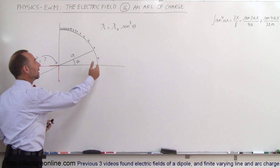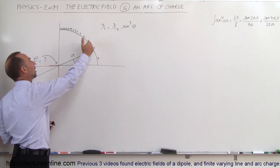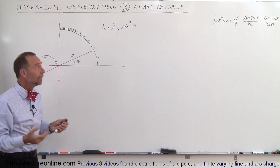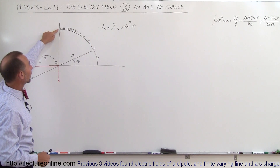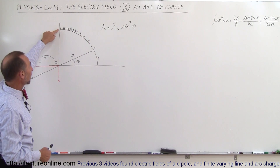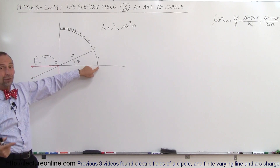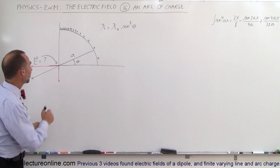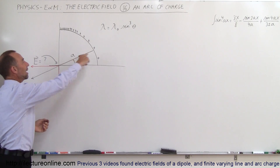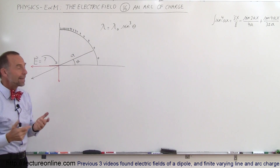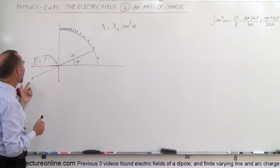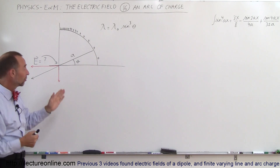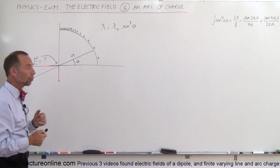You can see how the charge density increases as the angle gets closer to 90 degrees, because the sine of 90 is 1, meaning the linear charge density is lambda sub nought there, and over here it will be zero because the sine of zero is zero. So what's the electric field here, imagining that the arc has radius a? We can see that the electric field will consist of two components: a y component and an x component.